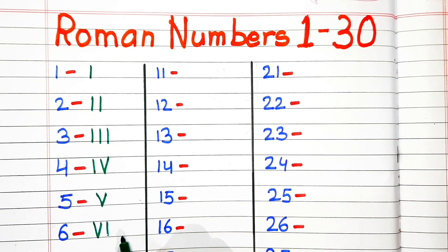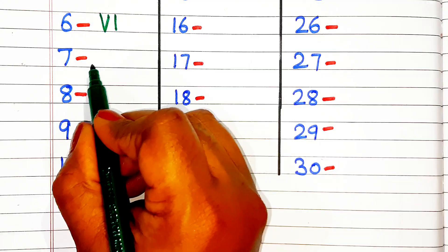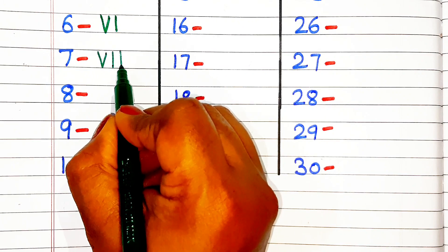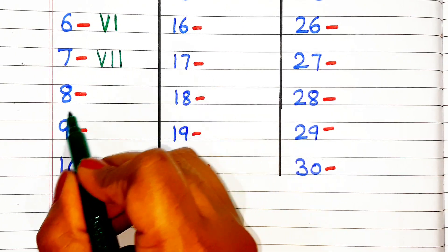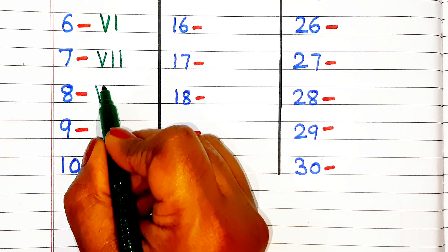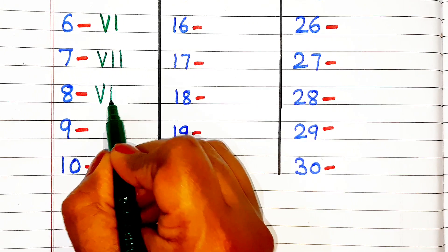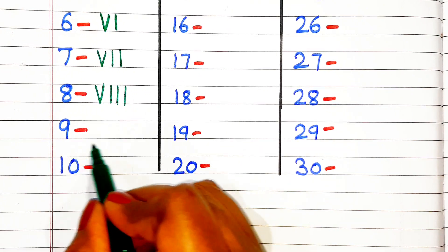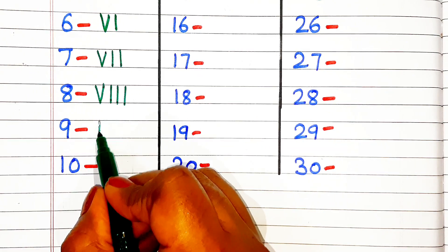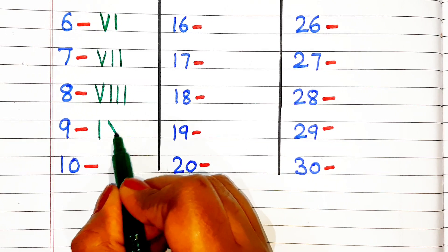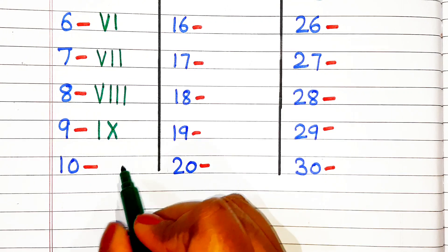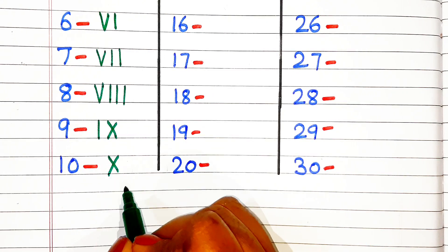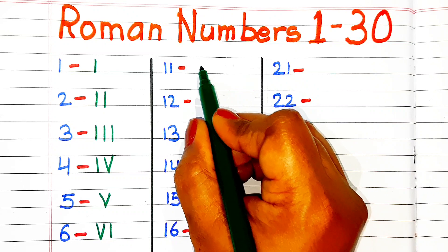6 = VI. 7 = VII. 8 = VIII. 9 = IX. 10 = X.